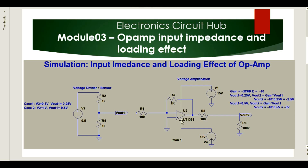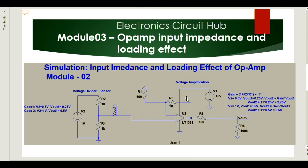Let us have a quick recap of those two modules. In module one, we saw that a potential divider is connected to the inverting terminal of an op-amp. There was some gain, but we were not getting the desired output because of the loading effect and input impedance. We had an input voltage and an output voltage after the divider, but we were not able to get the amplified output.